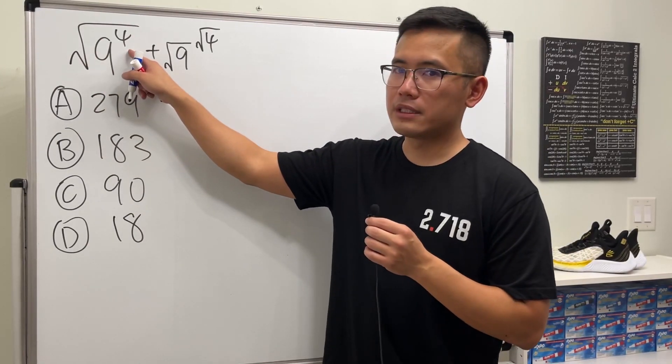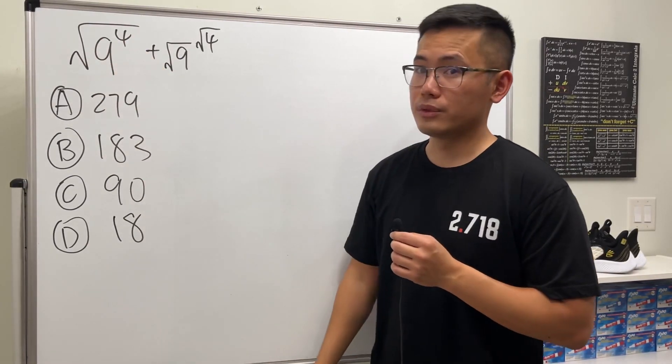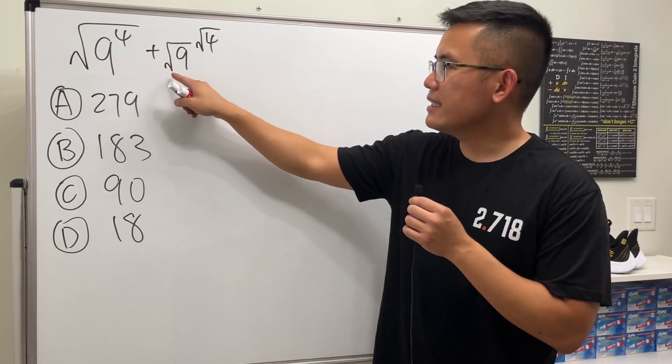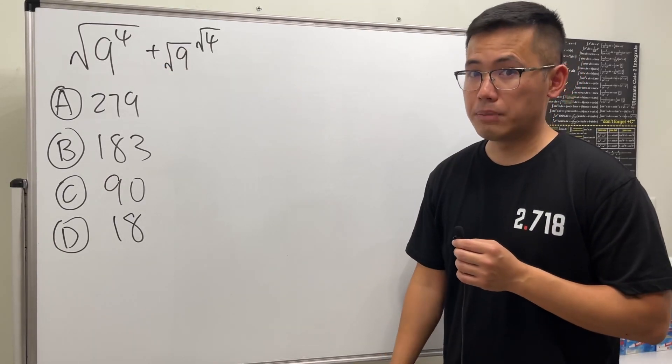Suppose we have square root of 9 to the 4th power, and then we are going to add square root of 9 raised to the square root of 4th power.